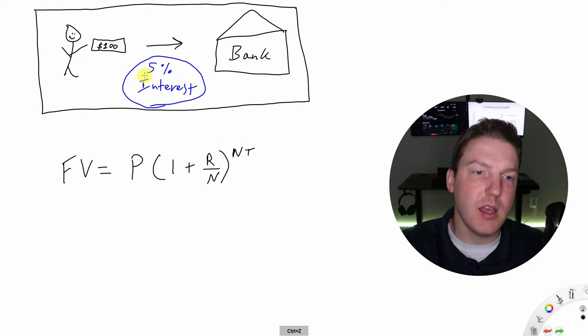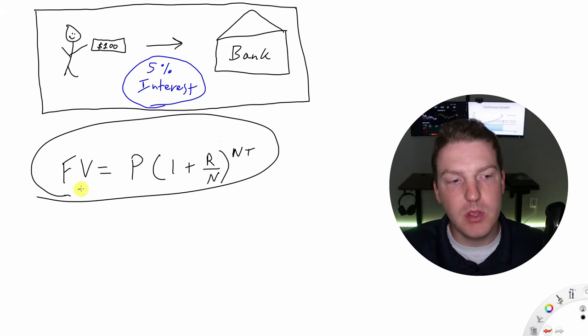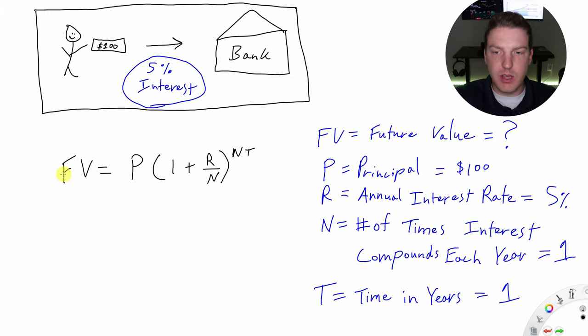You're going to deposit that money at a 5% interest rate. We can use this formula right here to determine what will be the future value of that $100 that you deposited at 5%. Let's define what each of the variables in this formula actually mean. The first one is future value FV and this is what we're going to be solving for with this equation. We know all the other variables values right now. So P is the principal amount which is equal to the $100 that we initially gave to the bank at the time when we put our deposit in. We can also call that present value if we wanted to.